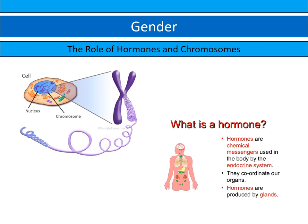Now hormones are chemical messengers, they're used in the body by the endocrine system. The endocrine system is made up of hormones and also glands. Hormones coordinate our organs and they are produced by the glands. An example of a hormone in the body is testosterone, which we're going to look at quite closely today. Hormones move around the body within the bloodstream and they're quite long lasting but quite slow to act.